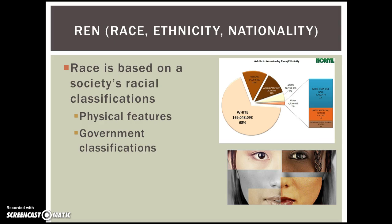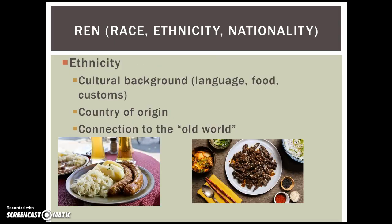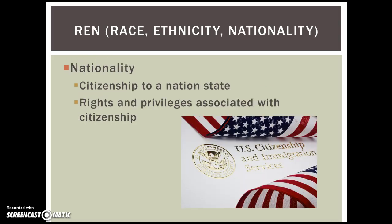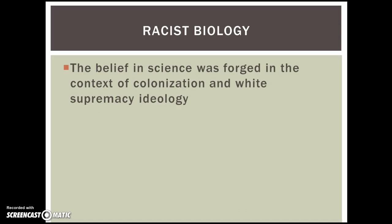Let's go over some concepts that are often confused: race, ethnicity, and nationality — or REN. Race is exactly what we've been talking about: a system of privileges based on racial classification. Ethnicity, on the other hand, is a person's cultural background — the food that they eat, the religion that they practice, the language that they speak, the customs that they have, and the norms they enforce within their own groups. This is often related to the country of origin that people come from and your connection to the old world. For example, you might be an American citizen but still practice your ethnicity — eating food customary to your family's country of origin. Nationality is your citizenship: what country you are a citizen of, which obviously brings certain rights and privileges. Those three concepts are often confused, so they need to be separated.